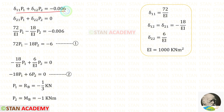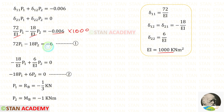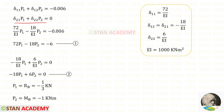In the first equation, let us apply the values of δ11 and δ12. Taking EI to the other side, and knowing EI = 1000, we get 0.006 × 1000 = 6. Let us keep this as equation 1. In the second equation, applying δ21 and δ22 and taking EI to the other side, 0 × EI = 0. Let us keep this as equation 2.